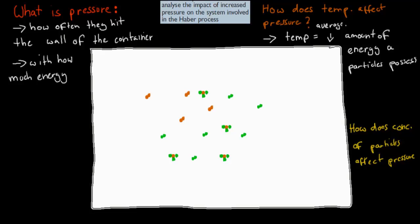Before I start going a bit more into this dot point, I quickly want to talk about what pressure actually is, because often pressure sounds kind of straightforward, but pressure has a chemistry definition as well. The definition of pressure is how often a particle hits the wall of a container, and with how much energy that particle hits the wall of the container — so, how often and with how much energy.